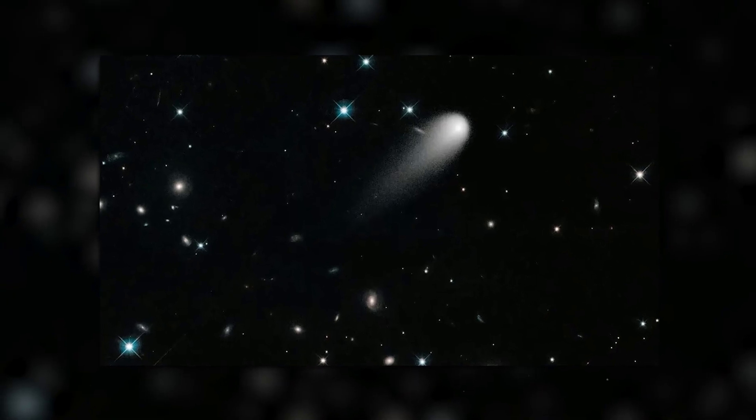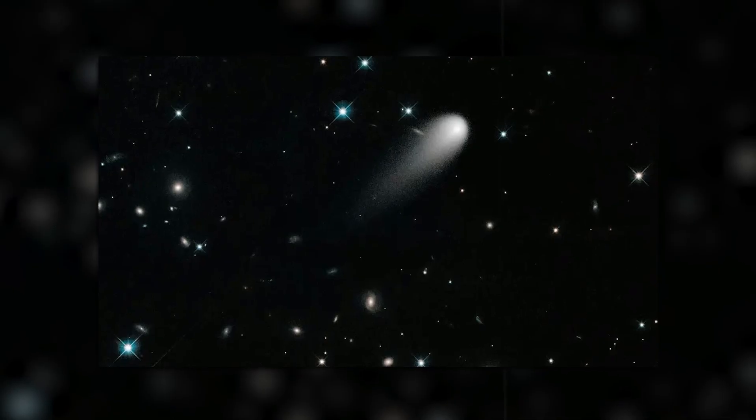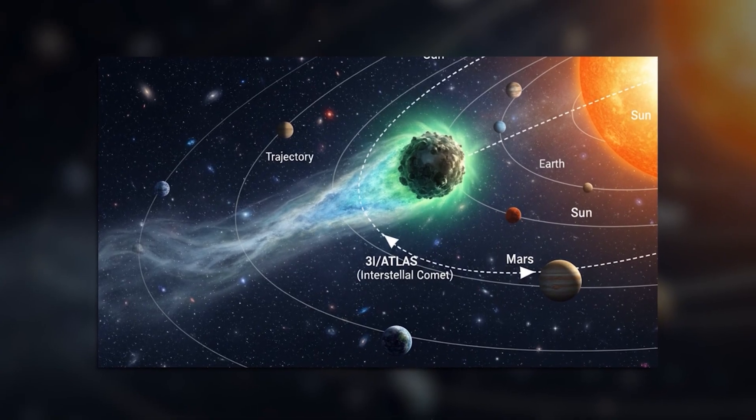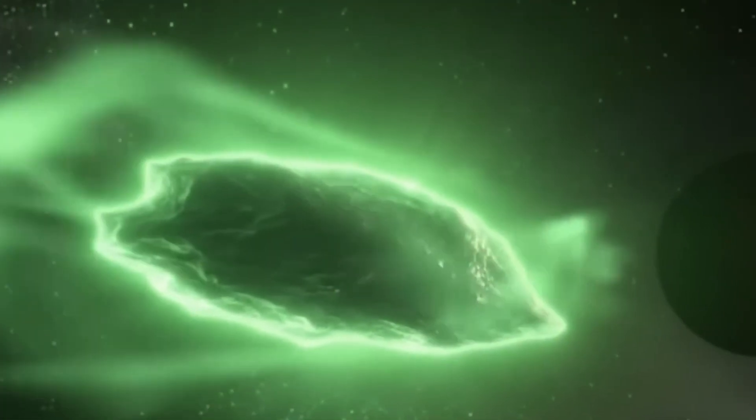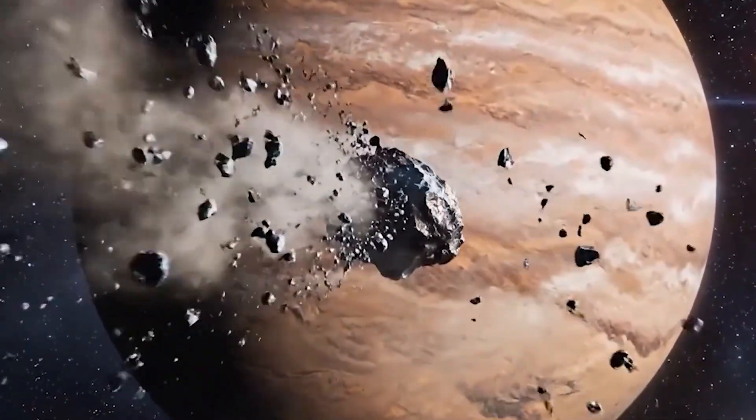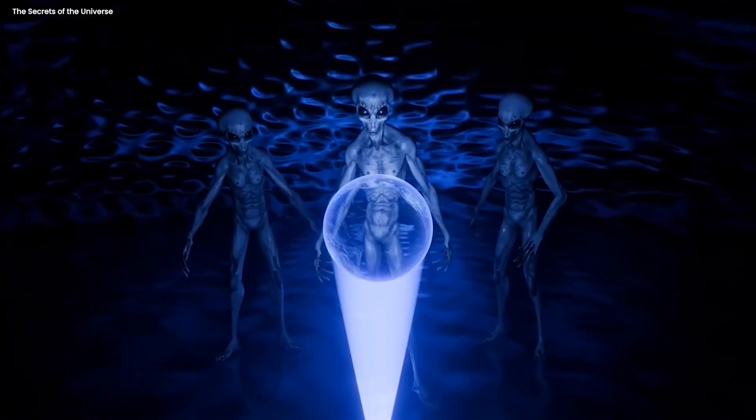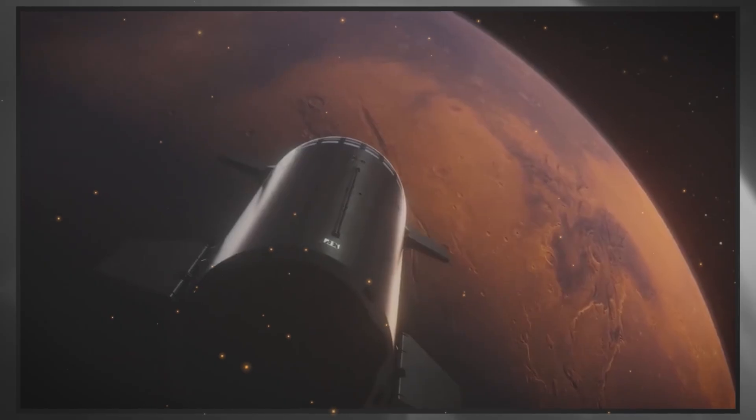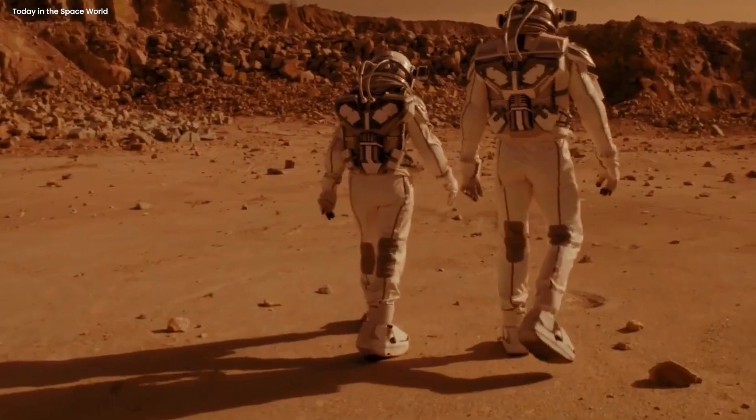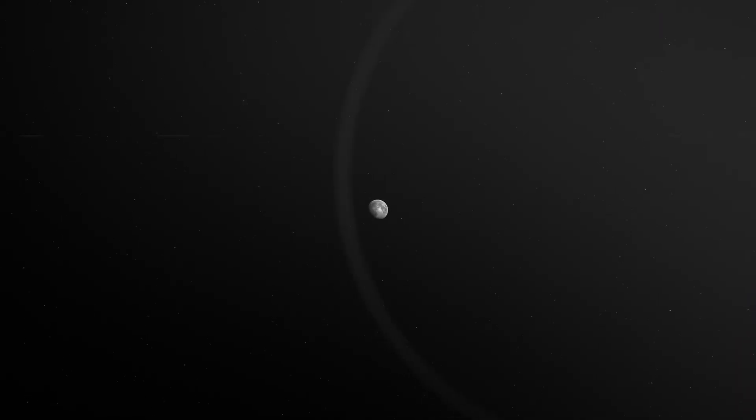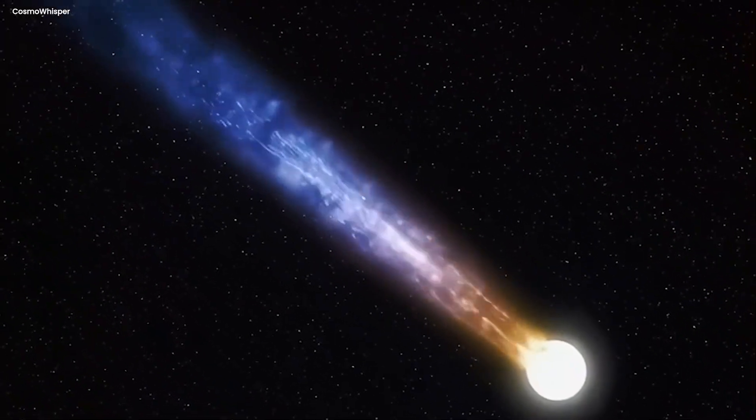Now, all of those things can be explained by natural processes if you really stretch the definitions of what's normal for a comet. But when you add them all up, it starts to look like 3i Atlas is either the weirdest comet we've ever discovered, or it's something that's pretending to be a comet. And if it's the latter, then the fact that it's headed straight for Jupiter instead of Earth suddenly makes a lot more sense. Because let's be honest, if you're an advanced alien civilization, and you're going to send a probe to explore another star system, you're probably not going to waste your time studying the inhabitants of one random planet. You're going to study the entire system. You're going to map out the star, investigate the gas giants, check out the interesting moons, and collect as much data as possible before heading back into interstellar space. And that's exactly what 3i Atlas has been doing.